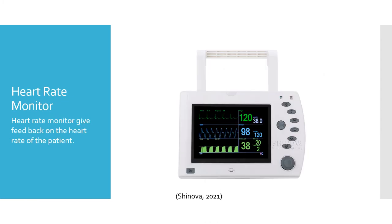Heart rate monitors give feedback on the heart rate of the patient. This is often used during surgery when the animal is under anesthetic. The problem that can occur with heart rate monitors is that they can sometimes not always keep accurate feedback on the heart rate of the patient.